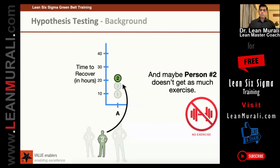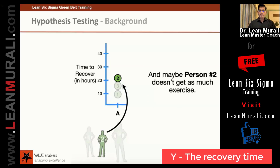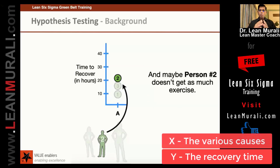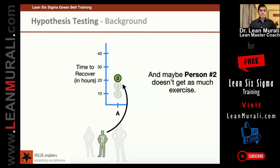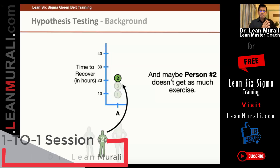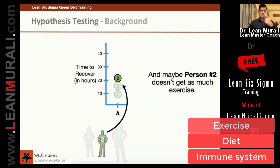Person 2 does not exercise that much, and hence there can be various causes. So in Six Sigma, we call Y as the recovery time and X as the various causes that affect recovery — or various causes that can help in recovery. The recovery time is a function of your immune system, your diet, your exercise, etc.